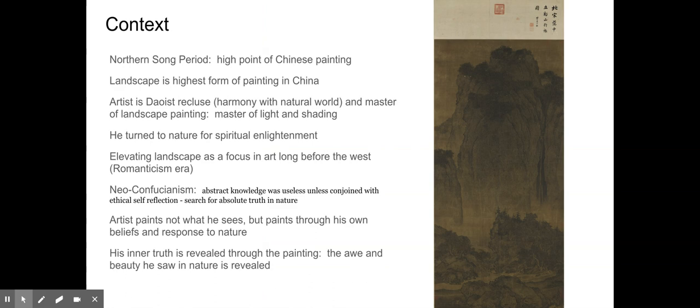This was done in the Northern Song period of Chinese painting, and it was the high point of Chinese painting. At that time, landscape was the highest form of painting in China. Landscape meant more than just what a place looked like, and that took a long time to get to in Western European art. This was done around year 1000 C.E., the time period of the Romanesque era, when religious art was dominating the European landscape.